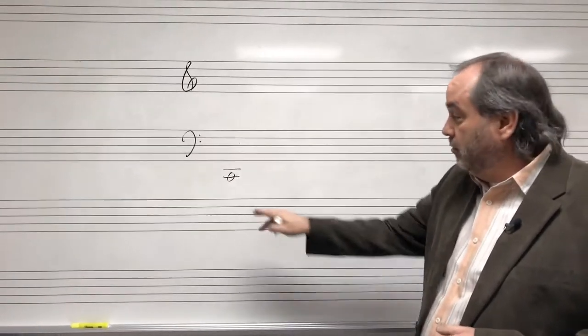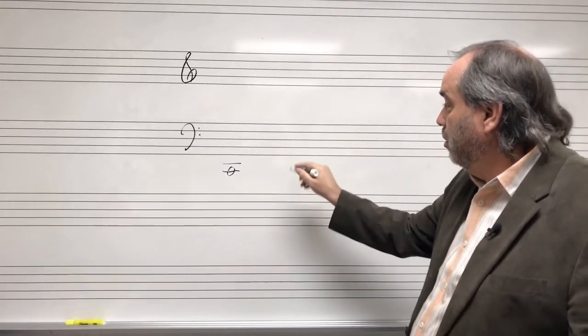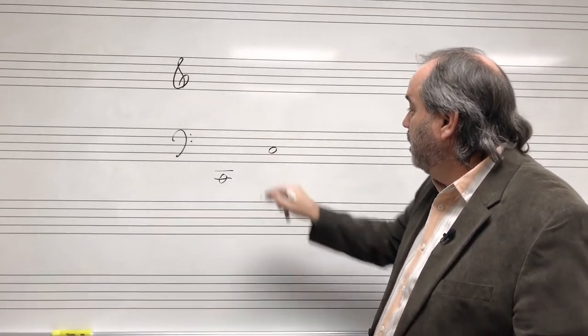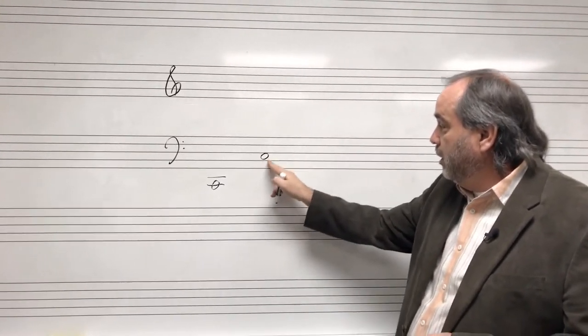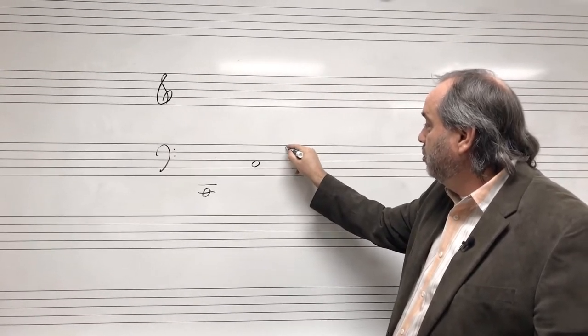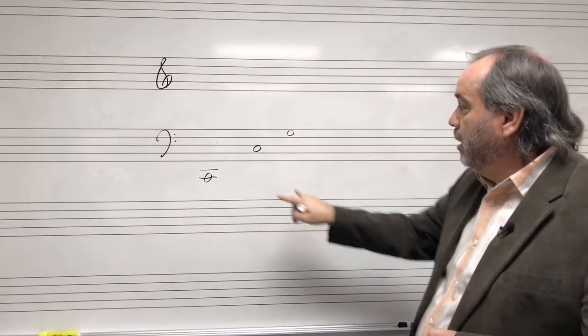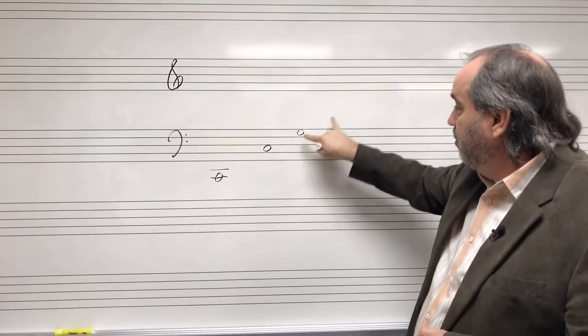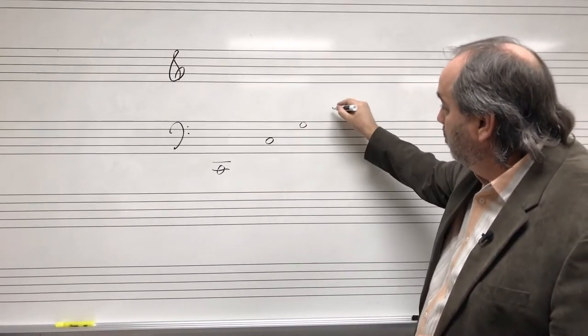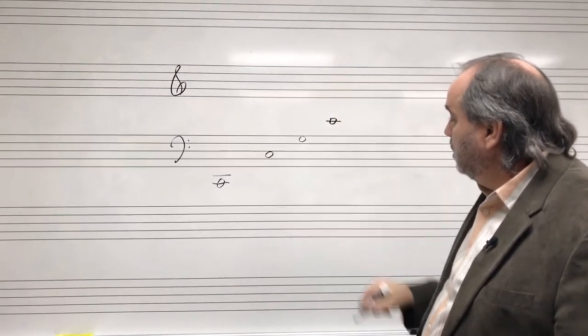Now, the first overtone of this fundamental pitch would be an octave up. And the second overtone would be a perfect fifth up. So perfect fifth up from C is G. And we go from octave, perfect fifth, and now we go perfect fourth, which is C again.